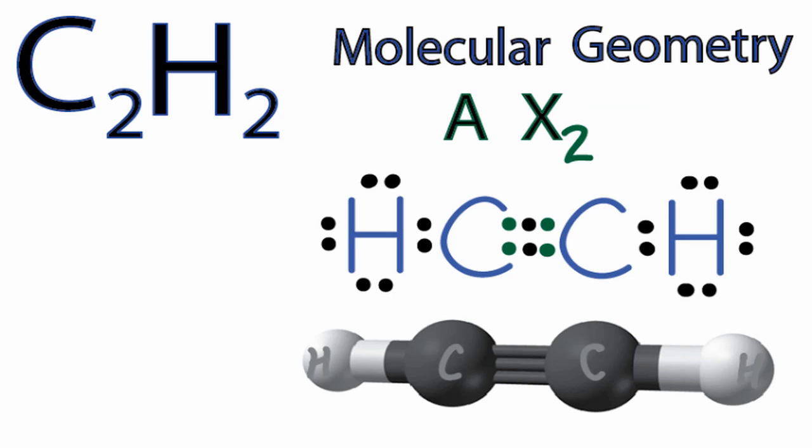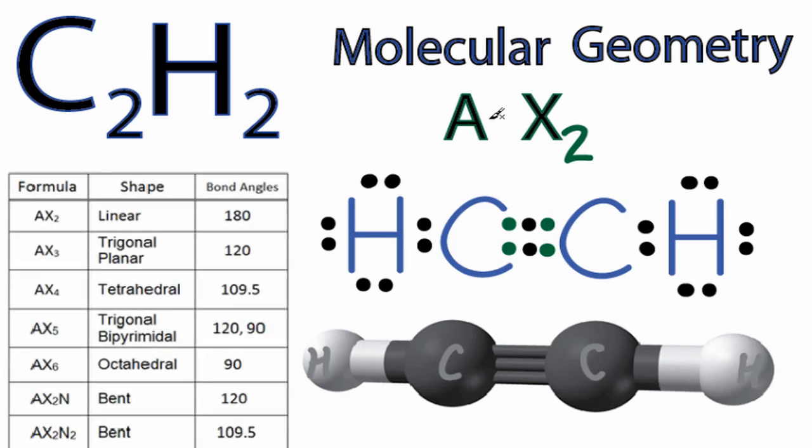So you could have memorized that AX2 is a linear molecular geometry. Or if you have one available, you could look it up on a table. And as we go to our table, the very first thing on it is AX2, which is linear. And the bond angle would be 180 degrees. That just means that it's a straight line.